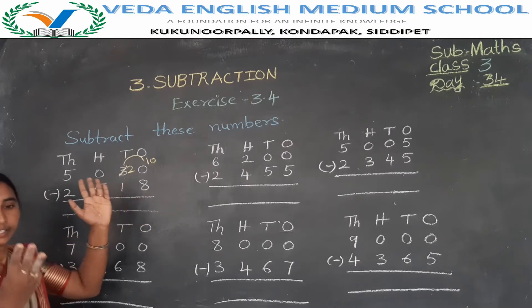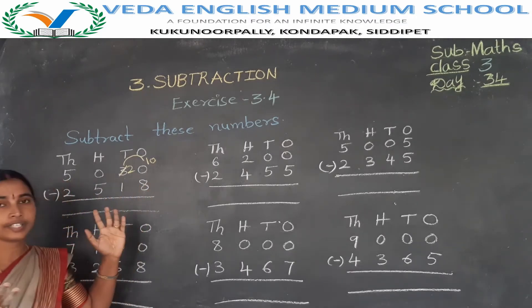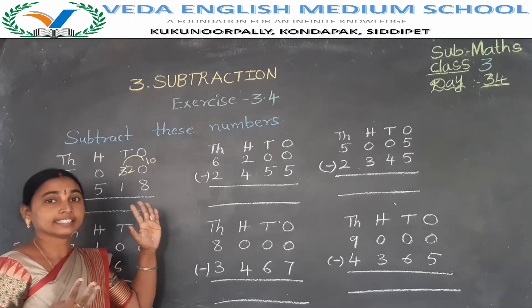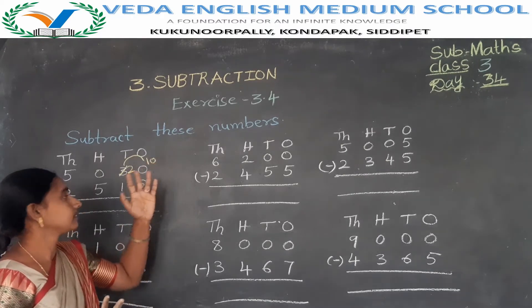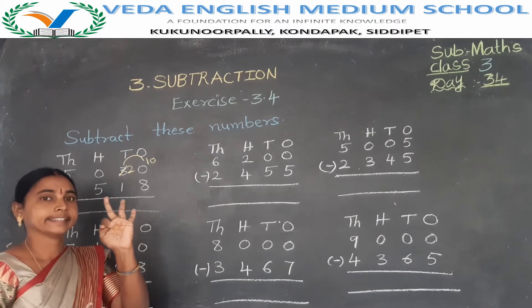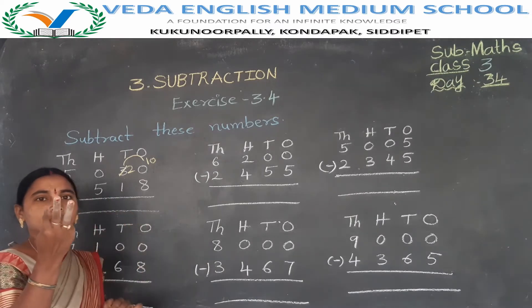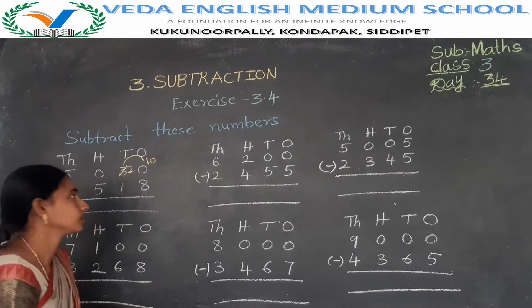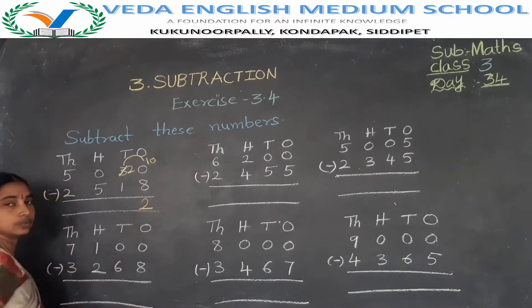Using backward counting — 10, 9, 8, 7, 6, 5, 4, 3, 2 — so 10 minus 8 equals 2.